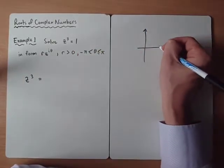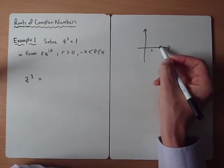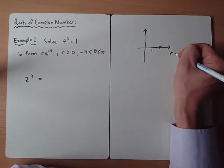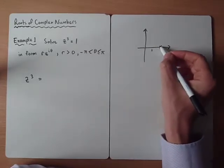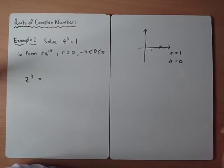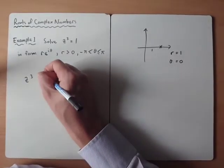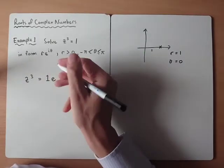Obviously for this first example, the number 1 is a distance of 1 away, so r would equal 1. The argument, well if it's on this initial line, the argument would be 0. So we could say 1 is equivalent to 1e to the 0i.